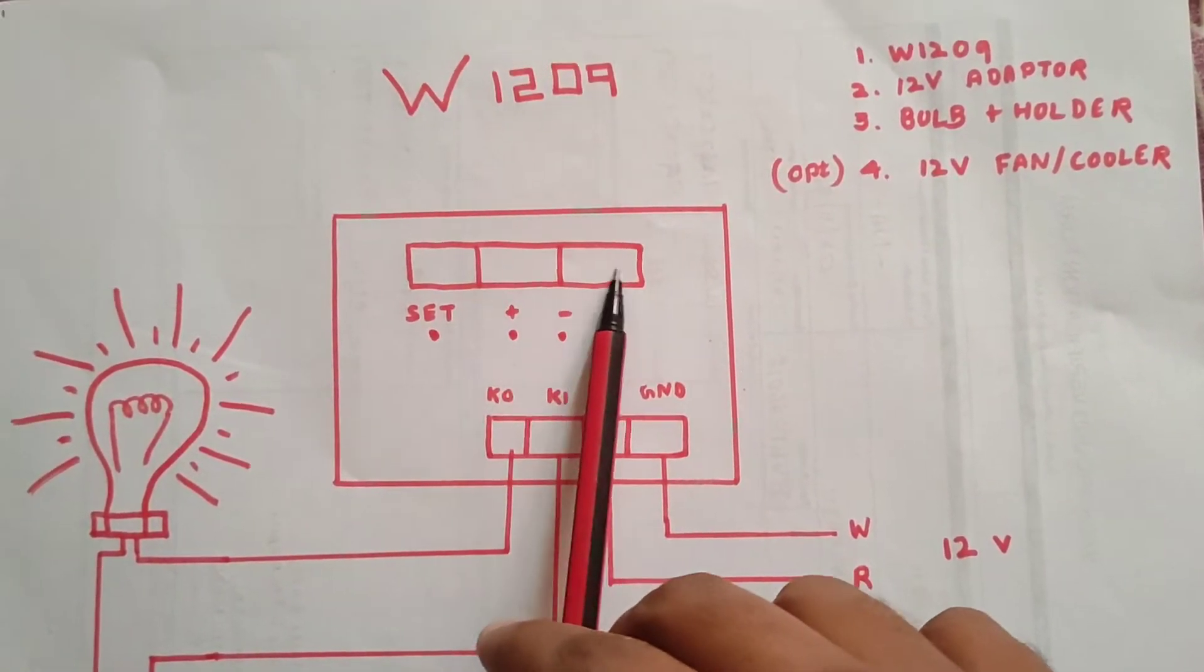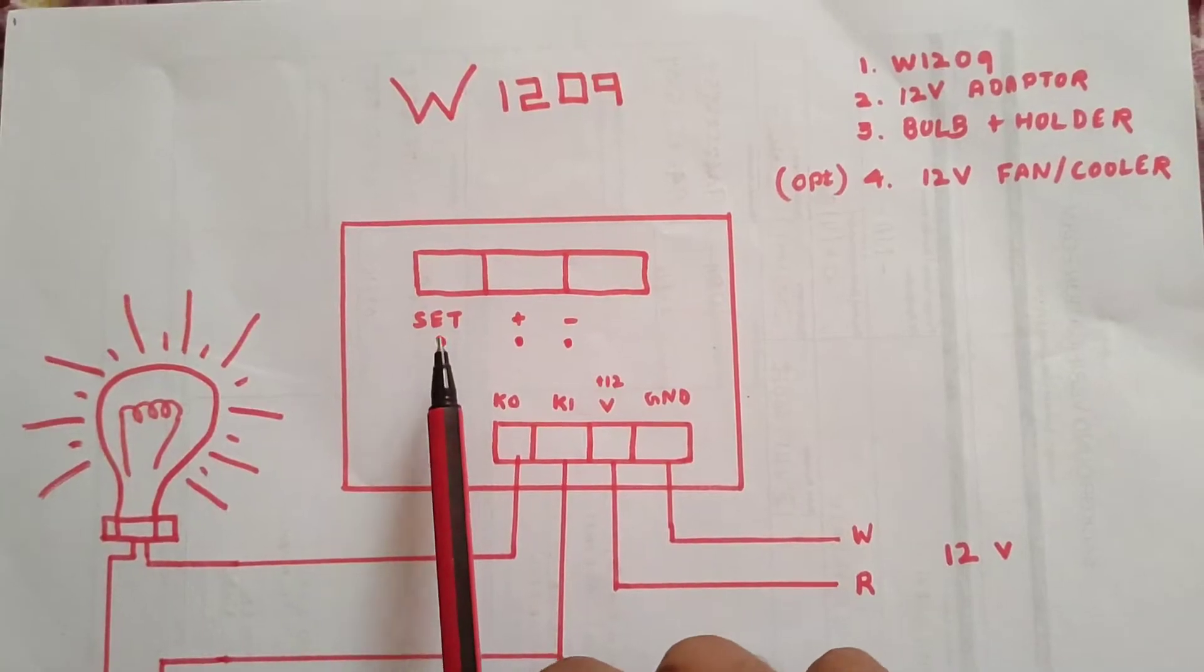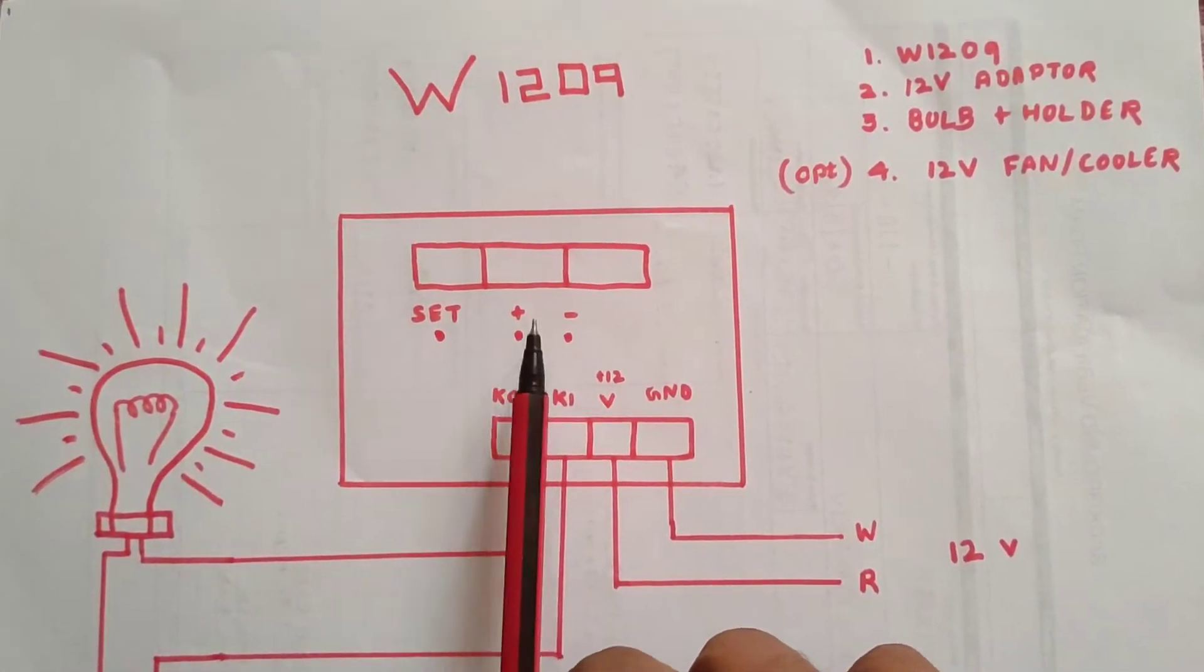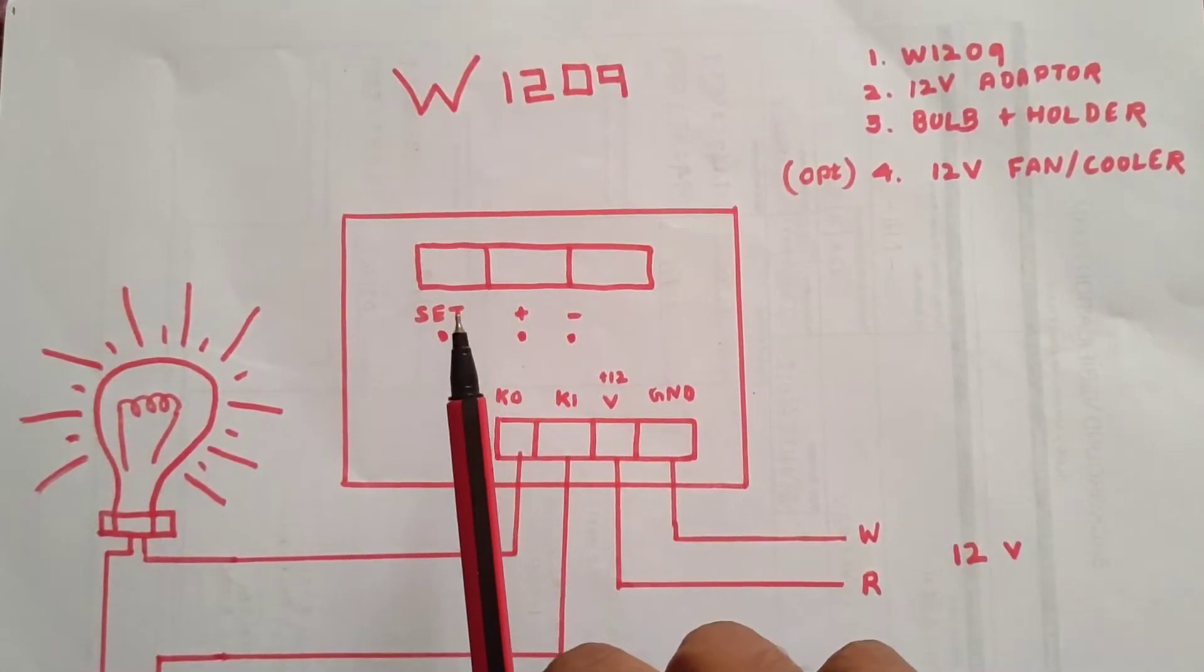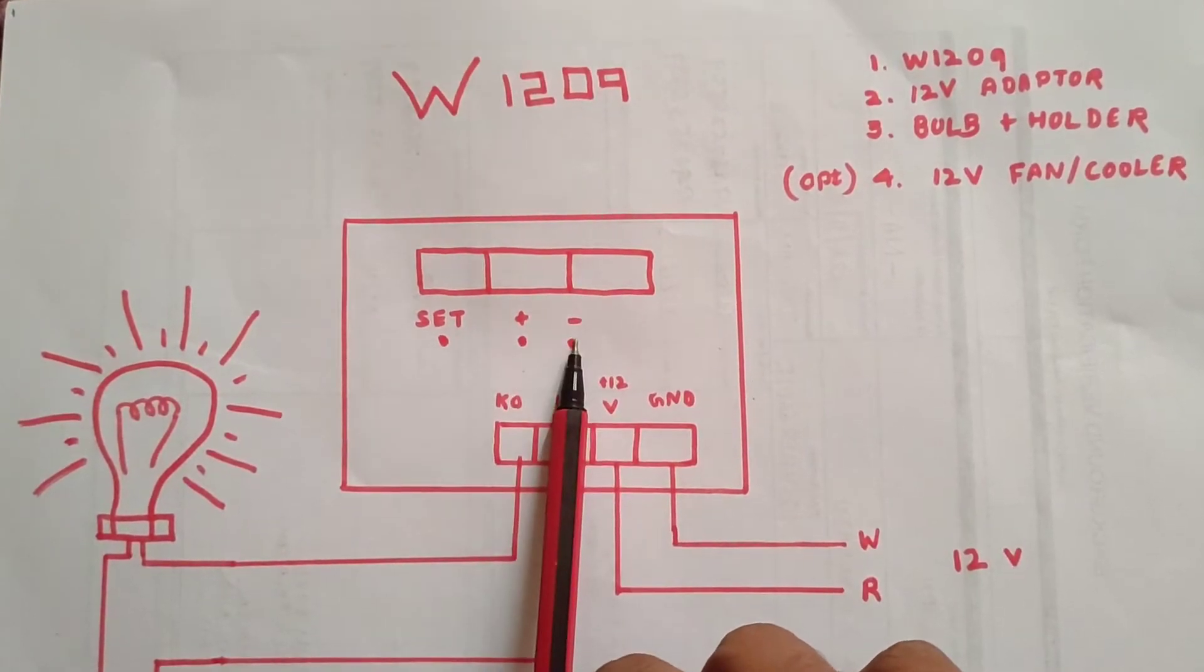We have a 3-digit display. There are 3 buttons: set, plus, and minus. Plus to increase, minus to decrease.